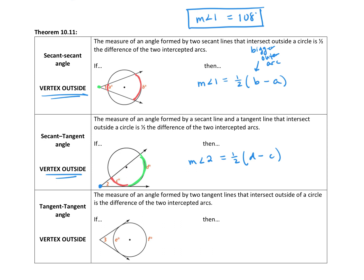Then we have a tangent-tangent angle — an angle formed by two tangents where the vertex is outside the circle. The measure of an angle formed by two tangent lines that intersect outside a circle is half the difference of the two intercepted arcs. Following angle three out, we intercept inner arc E and outer arc F. So the measure of angle three equals one half times arc F minus arc E.